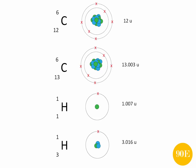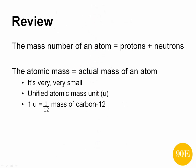So for this video, we just want you to remember that the mass number of an atom is the number of protons and neutrons, whereas the atomic mass is the actual mass of that atom, and it's really, really small. And for this reason, we don't use grams in typical calculations. We use the unified atomic mass unit.